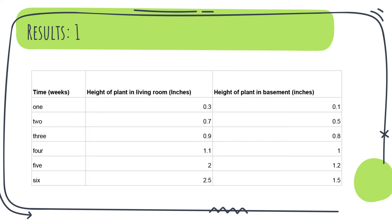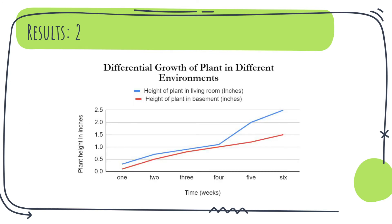As for the results of my experiment, as you can see in the table, measurements were taken in increments of one week and recorded as the height of the plants. I put one of my plants in the living room and one in the basement, and as you can see they had different heights each week. This is also shown in a graph.